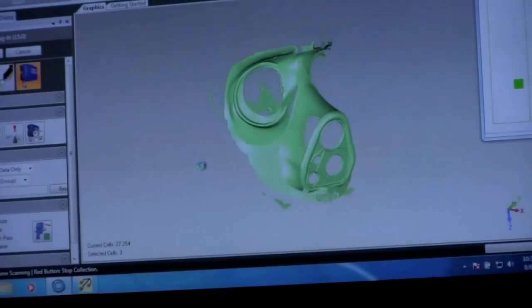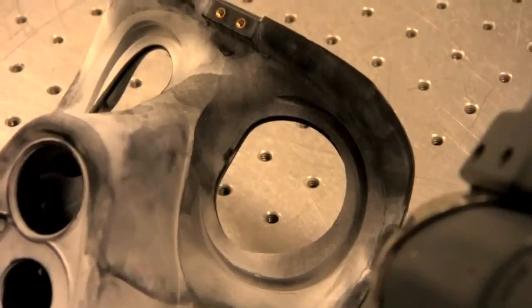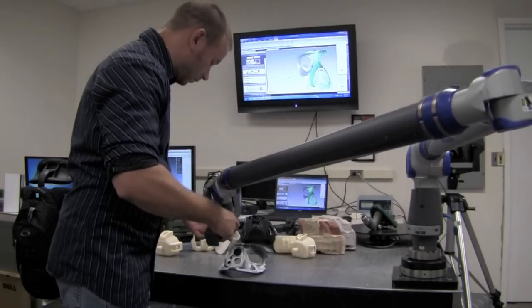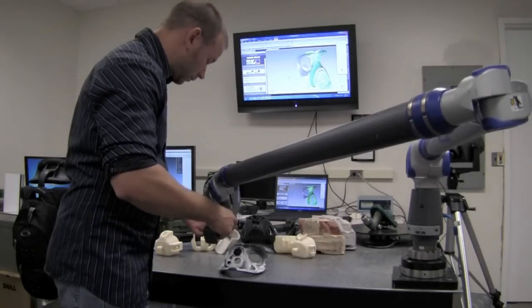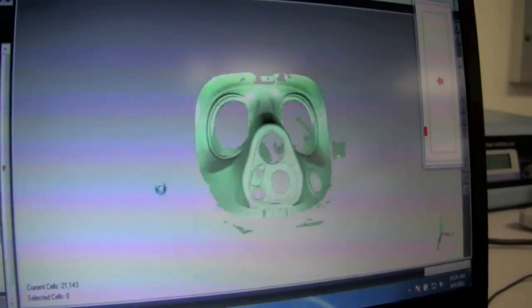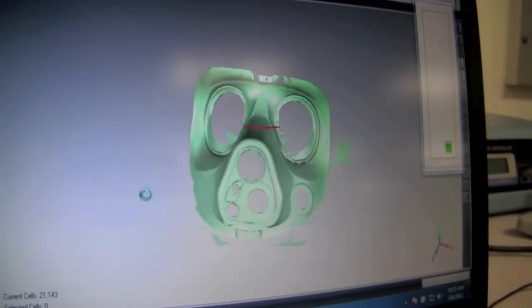CAD is computer-aided design. It opens the door for applications like reverse engineering. As an example, an Army technician is scanning part of a protective mask. As the laser passes over every millimeter of the object, the computer lays in points in 3D space.